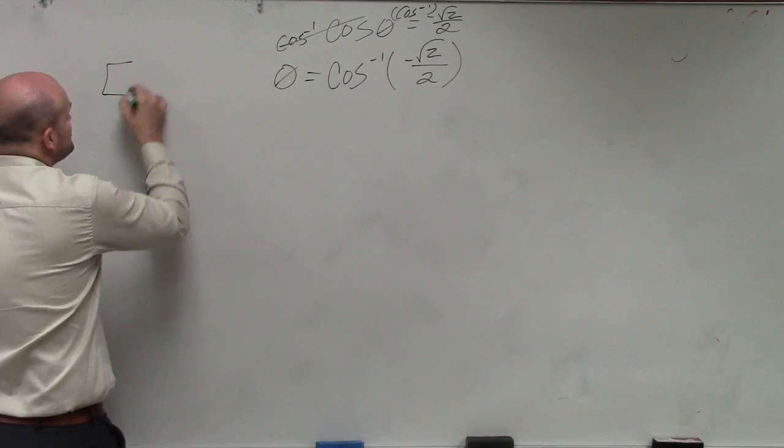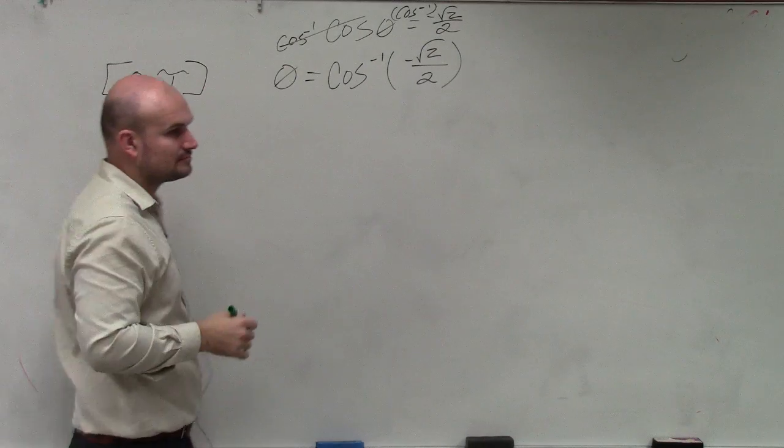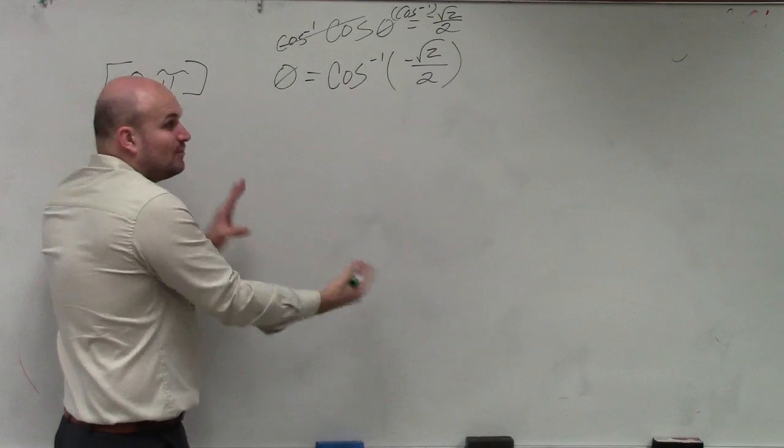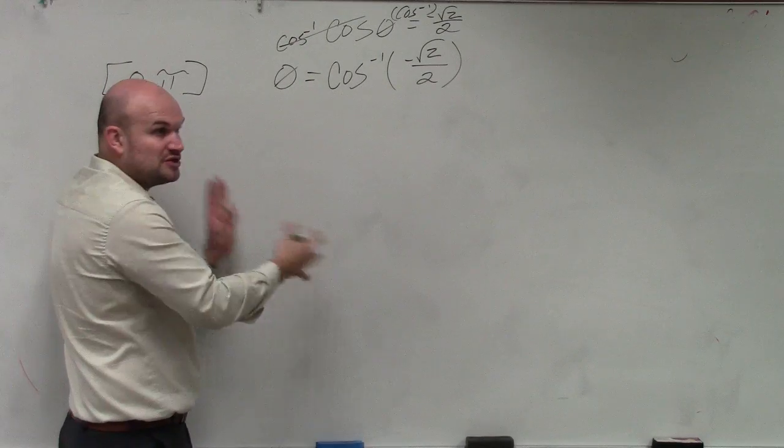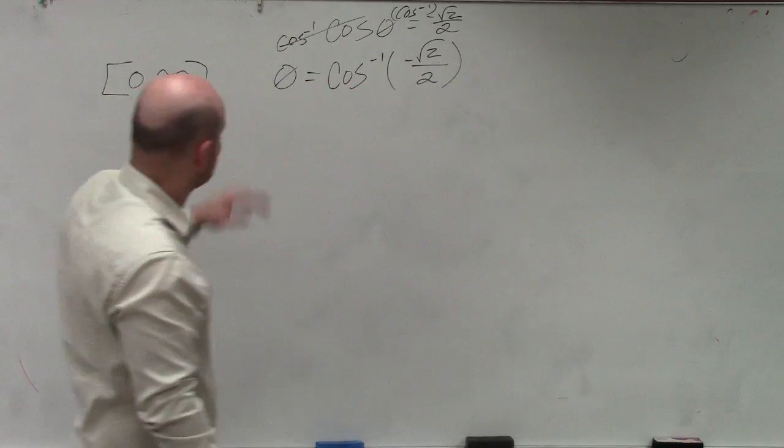So I know my restriction of my angles have to be between 0 and π. That's my restriction. Remember I wrote down the restriction? Because the only way for us to flip that graph for it to be a function was to have a restriction. The restriction on the domain of cosine is going to be 0 to π.